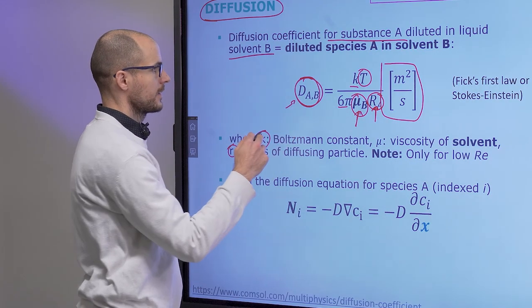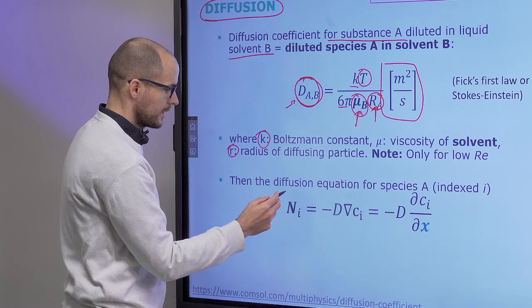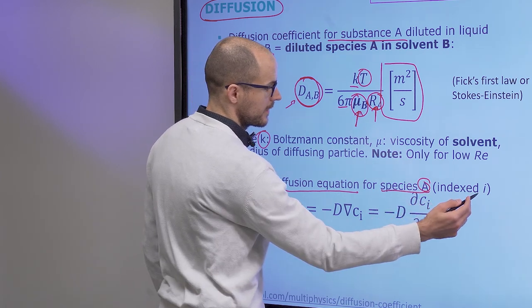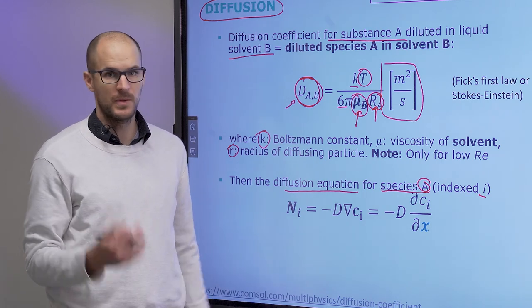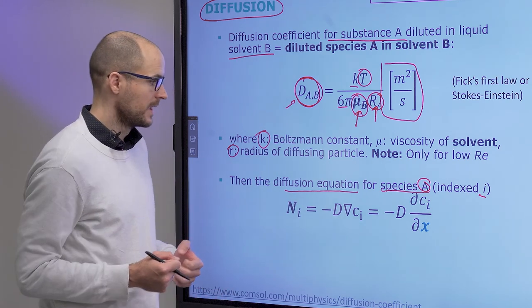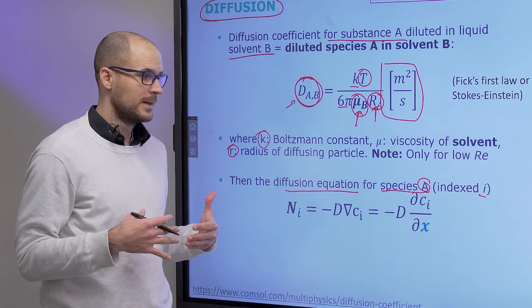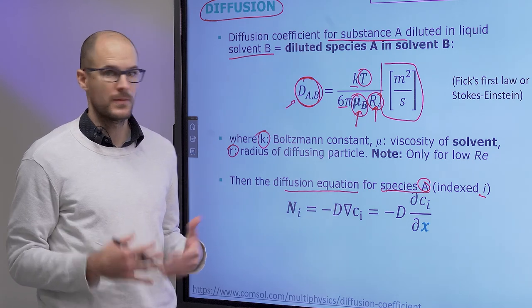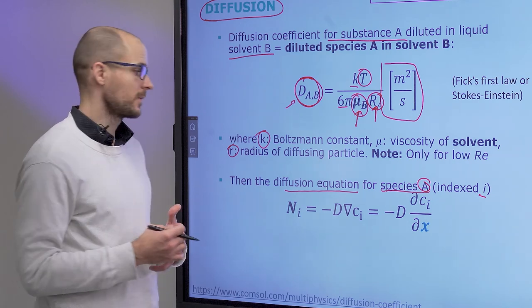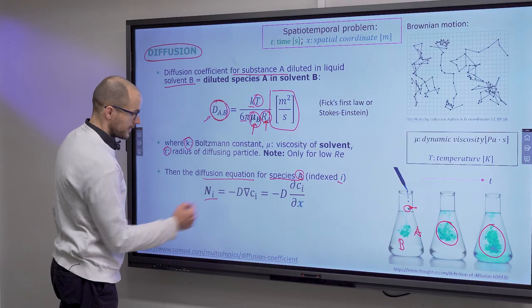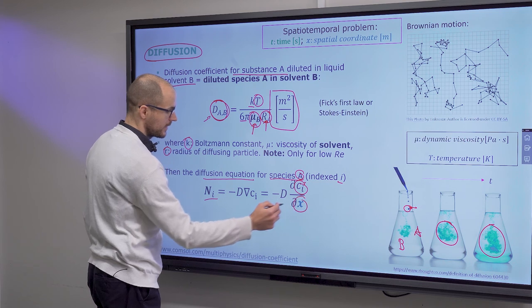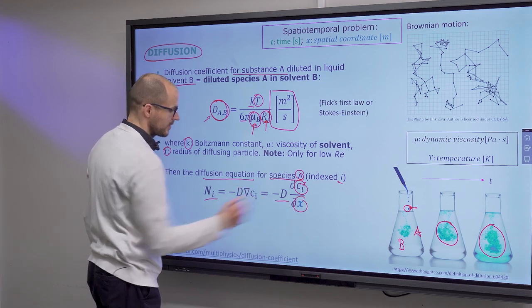If D is the diffusion coefficient, then the diffusion equation for a species A gives the magnitude of the molar flux as equal to the change of concentration in space for species A multiplied by the diffusion coefficient. Species can be another liquid or a microparticle — in any case dissolved in a large amount of solvent, so the concentration of the species relative to the solvent is quite small. This is what determines diffusion.